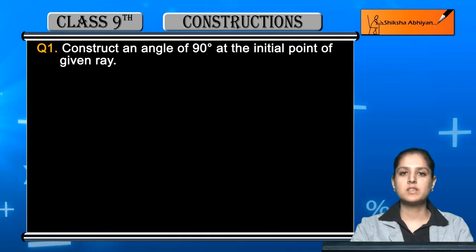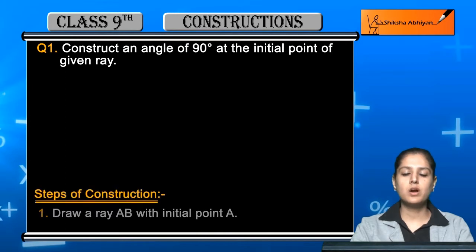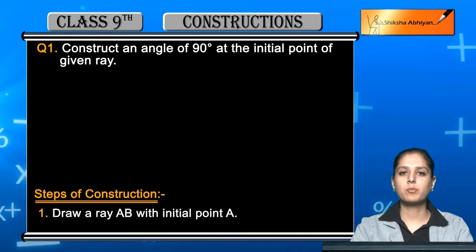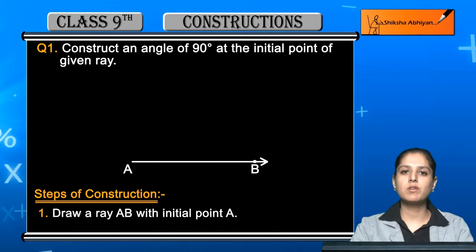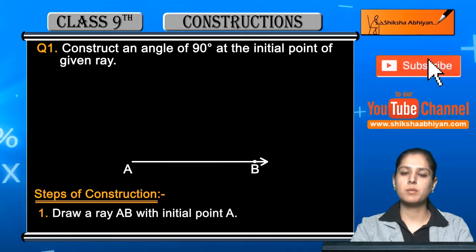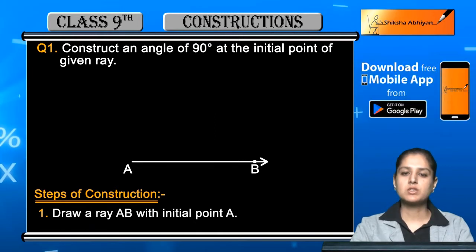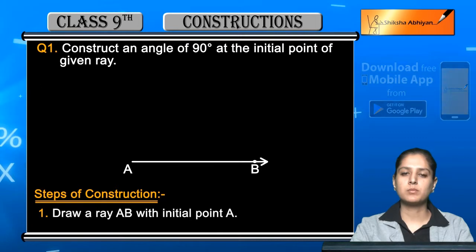So let us begin with the steps of construction. First step is draw a ray AB with initial point A. First, you have to draw a line which you will name. Aur A uska initial point hoga, matlab ek line draw karke uske ek side pe arrow line dalenge aur jo arrow wala partisko AB mark karenge aur jo dusra wala partisko A mark karenge. So that will be a ray AB jiska initial point hai A.